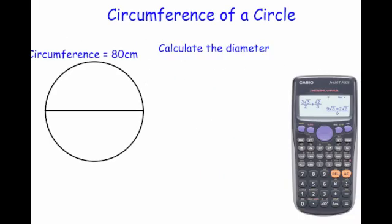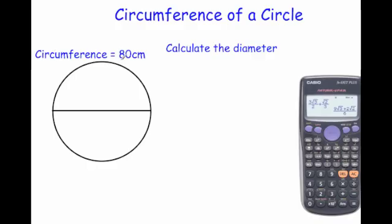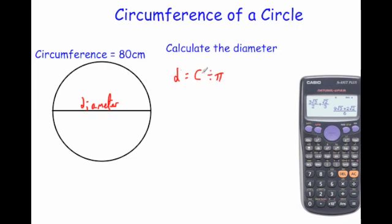Let's look at another question. This time we're told the circumference of a circle is 80 centimetres, and we need to find the diameter. Since circumference equals pi times diameter, to find the diameter we do the inverse: divide by pi. So the diameter equals the circumference divided by pi, which is 80 divided by pi.